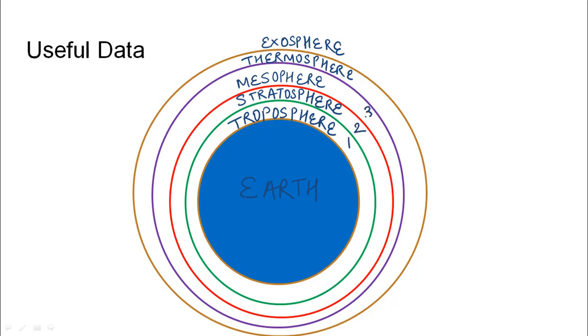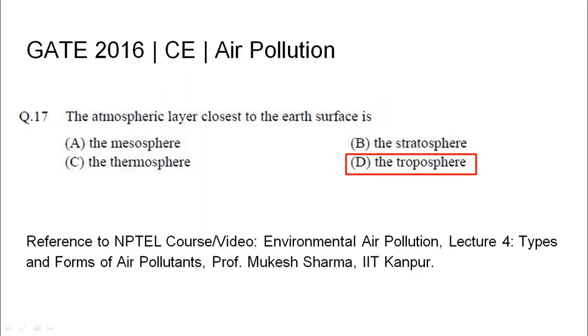So the atmospheric layer closest to the earth's surface is D) troposphere. The relevant NPTEL reference has been mentioned.